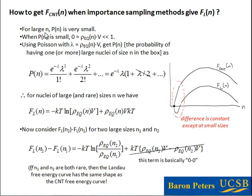For very large n, the probability of having a nucleus of that size is extremely small — effectively very close to zero. So the population of nuclei of size n multiplied by the volume of the simulation box is still a very small number; it's unlikely we even have one in our simulation box. This is the average number of nuclei of size n, and it's typically much less than one. We use the Poisson distribution: lambda, the expected number of nuclei of size n, is this quantity.